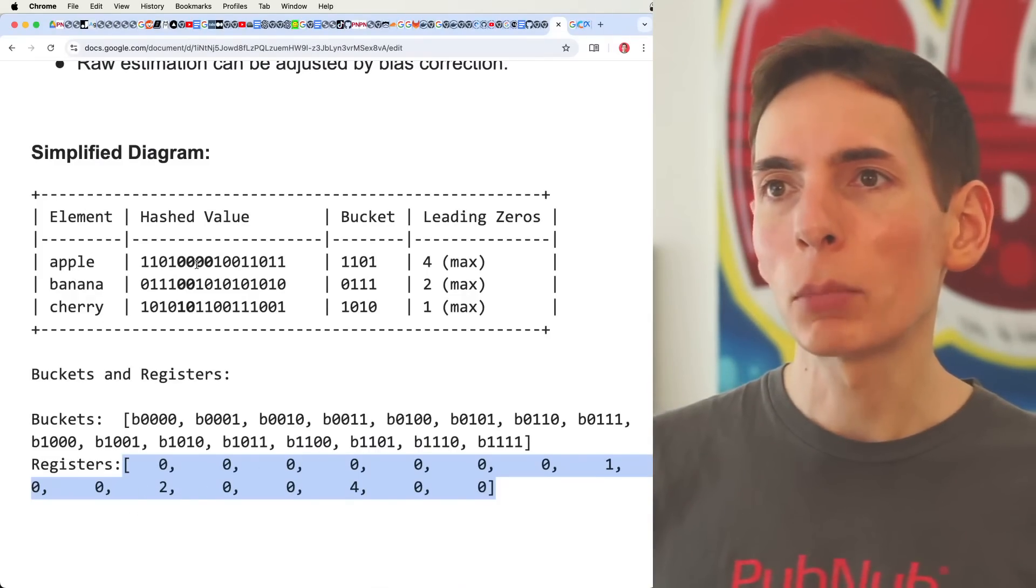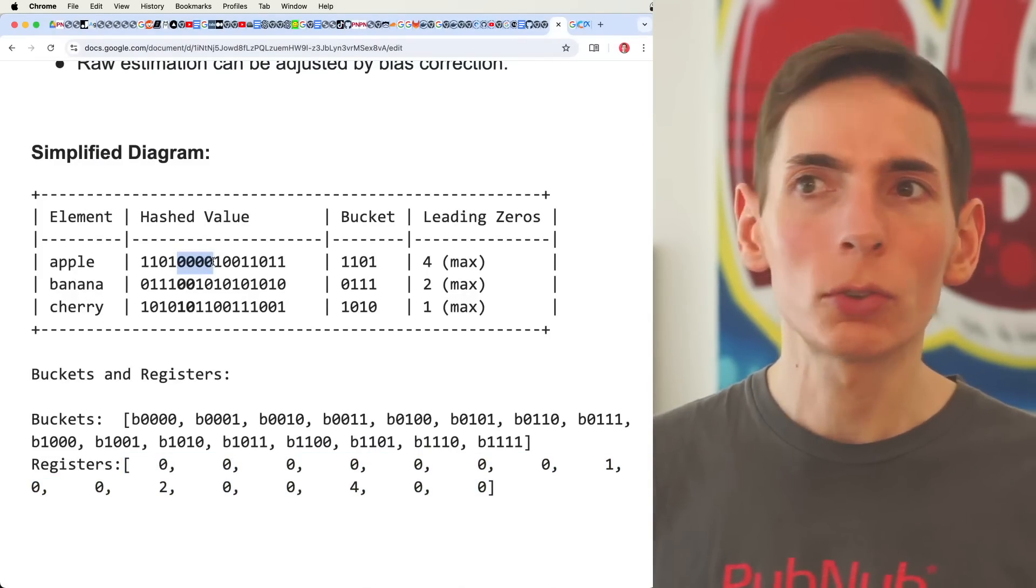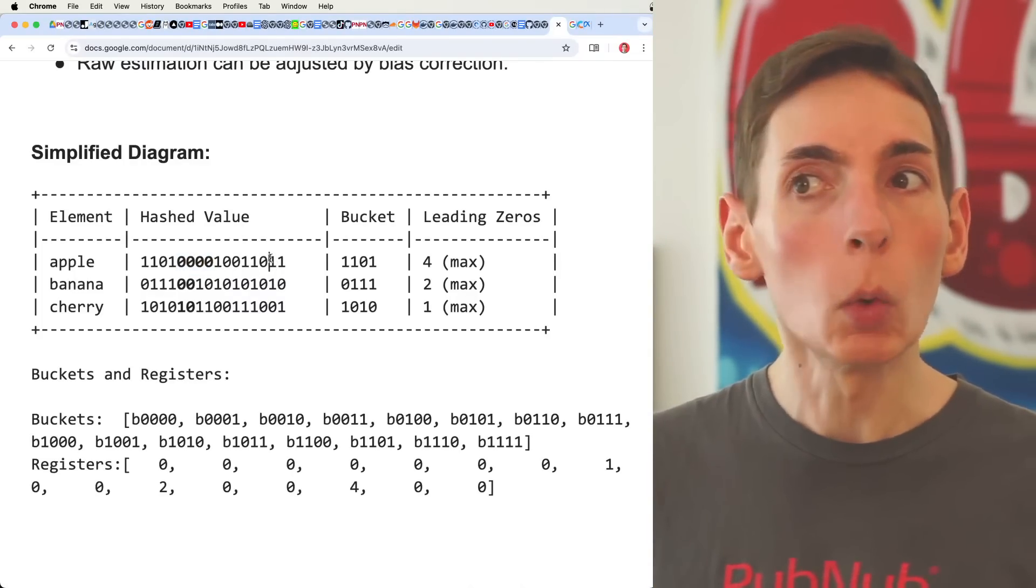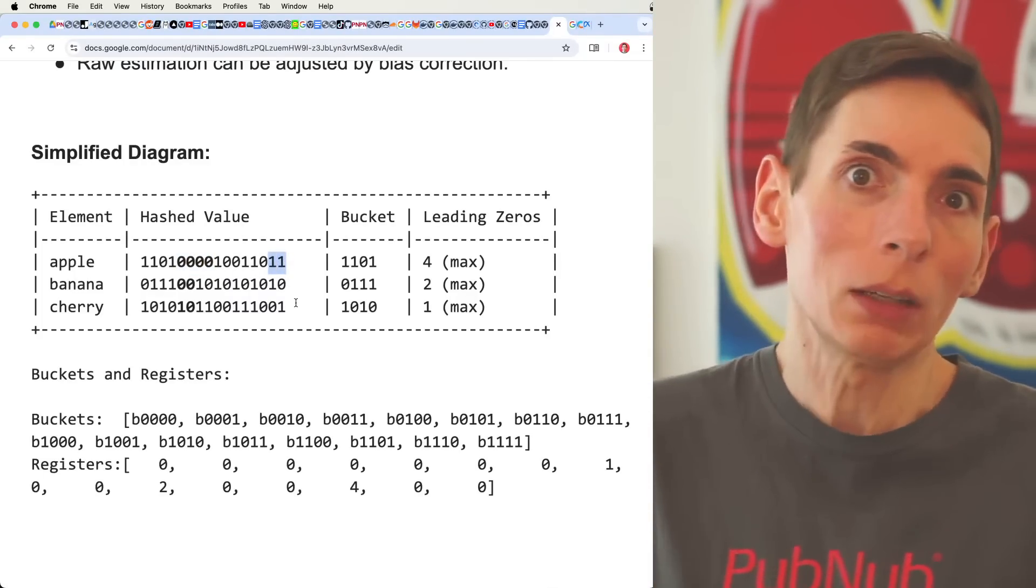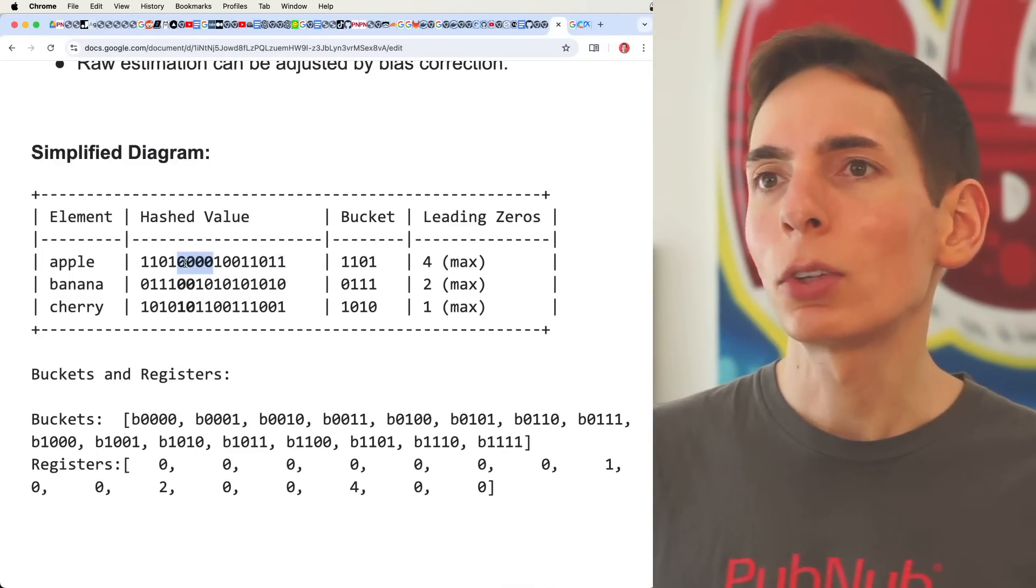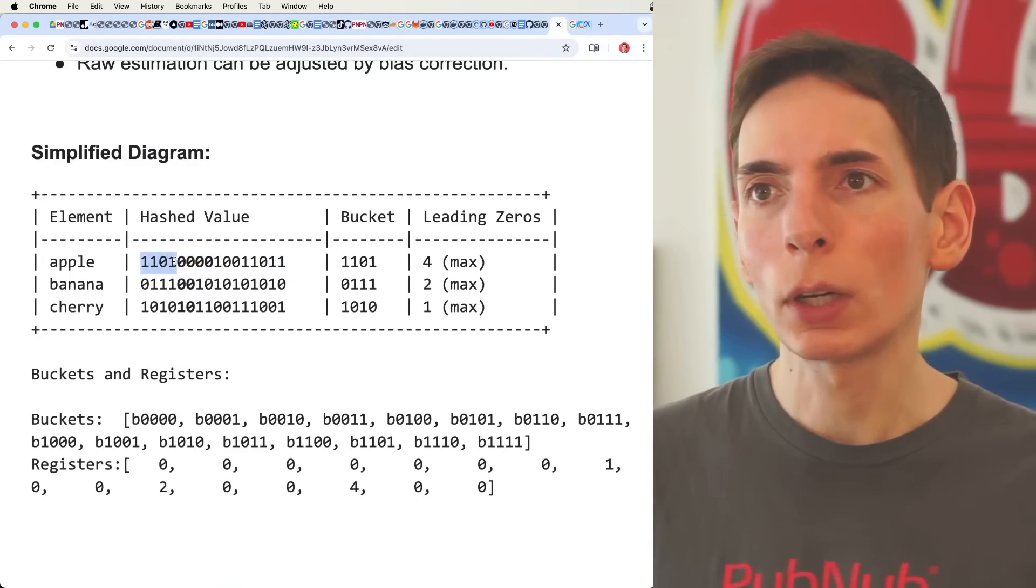And we find the number of leading or trailing zeros, however you want to do it. Just you have to be consistent. It doesn't really matter. You can even do leading or trailing ones if you want it. It's the same thing. It doesn't really matter, it's just you have to be consistent.